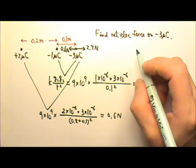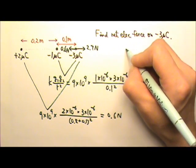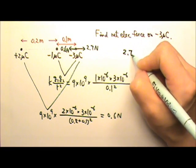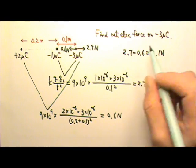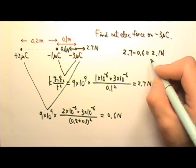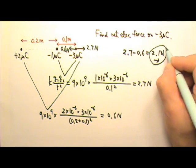Since there are two forces in opposite directions, to find the net force, we have to subtract. And so it is 2.1 N. And since the force to the right is stronger, this net force goes to the right.